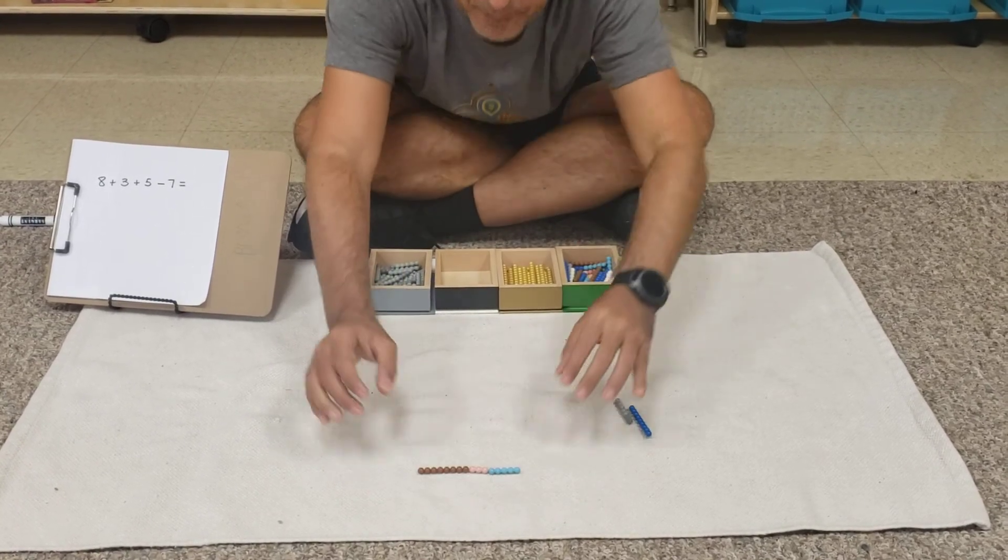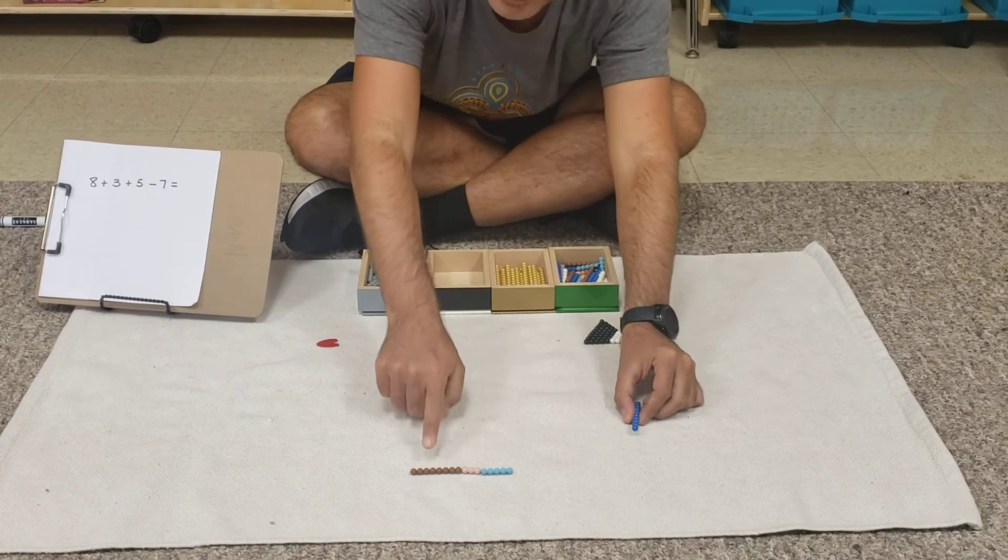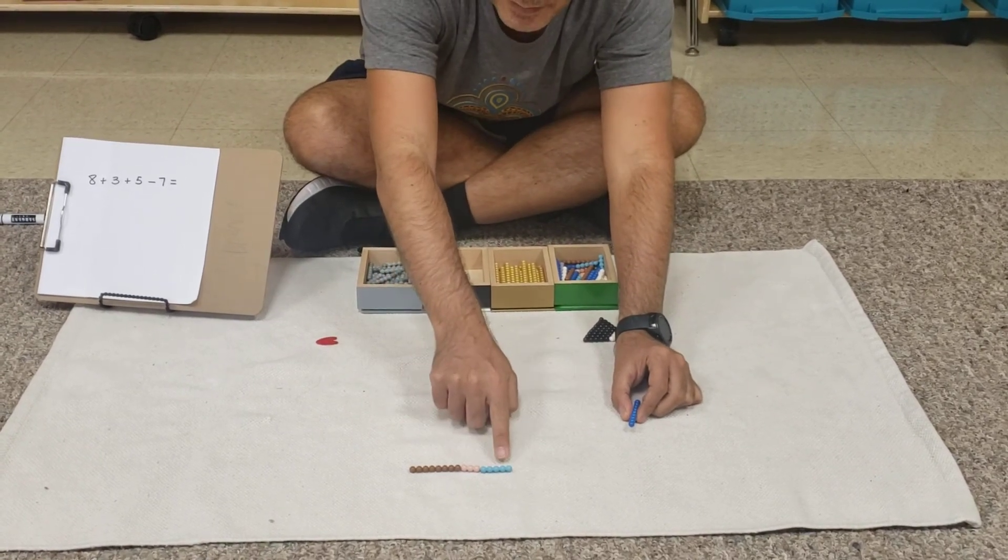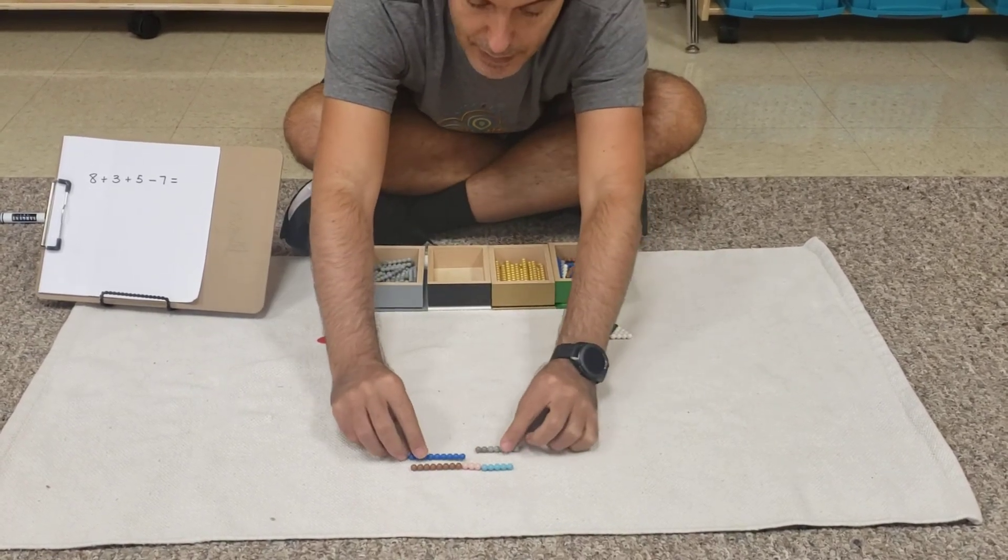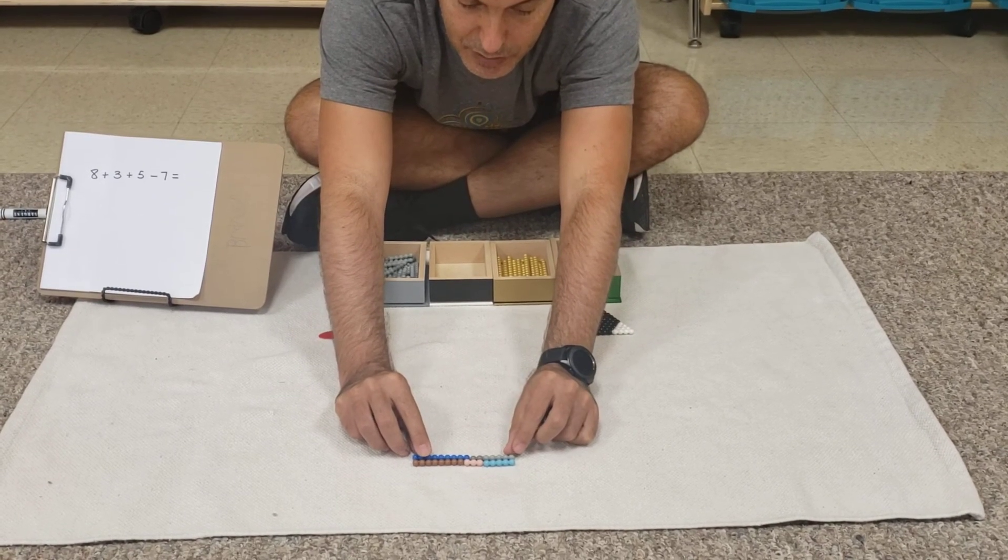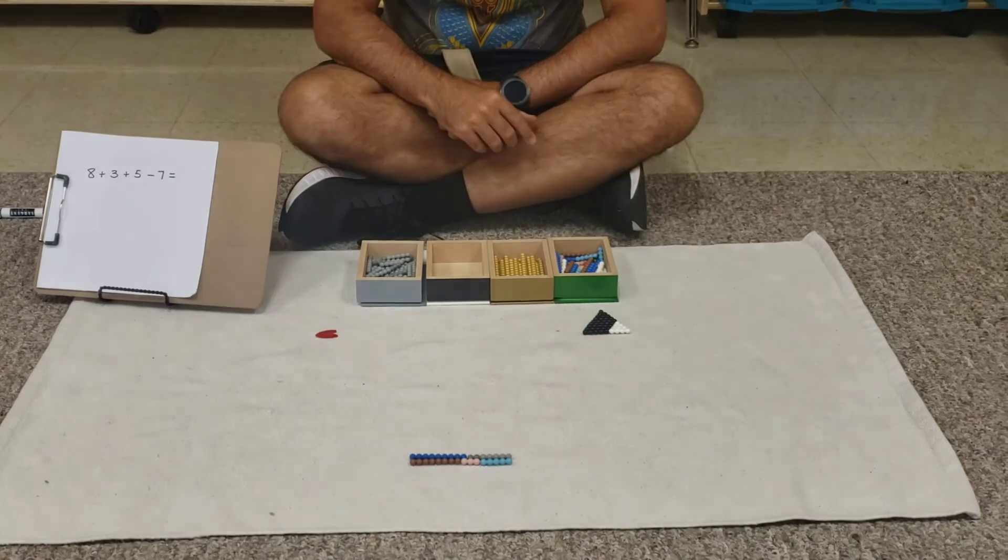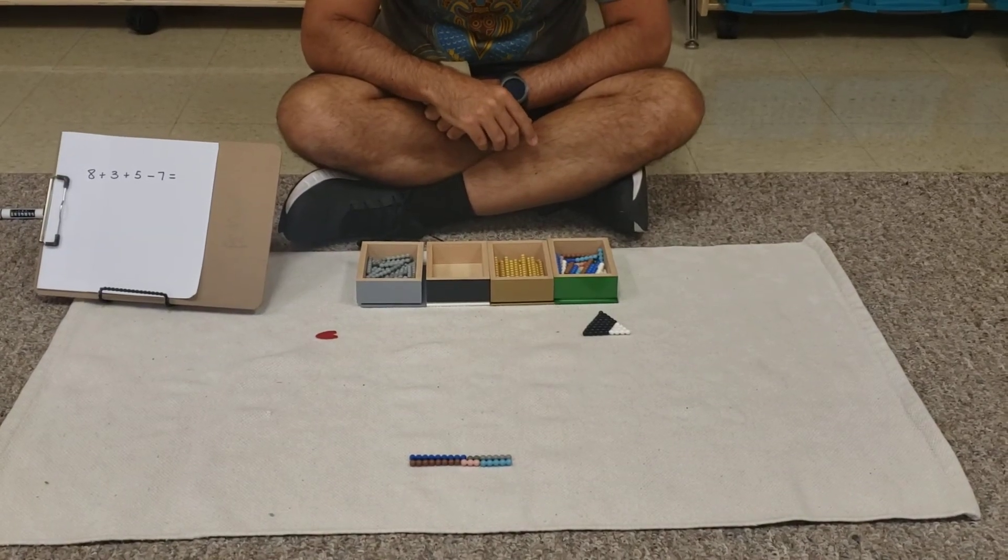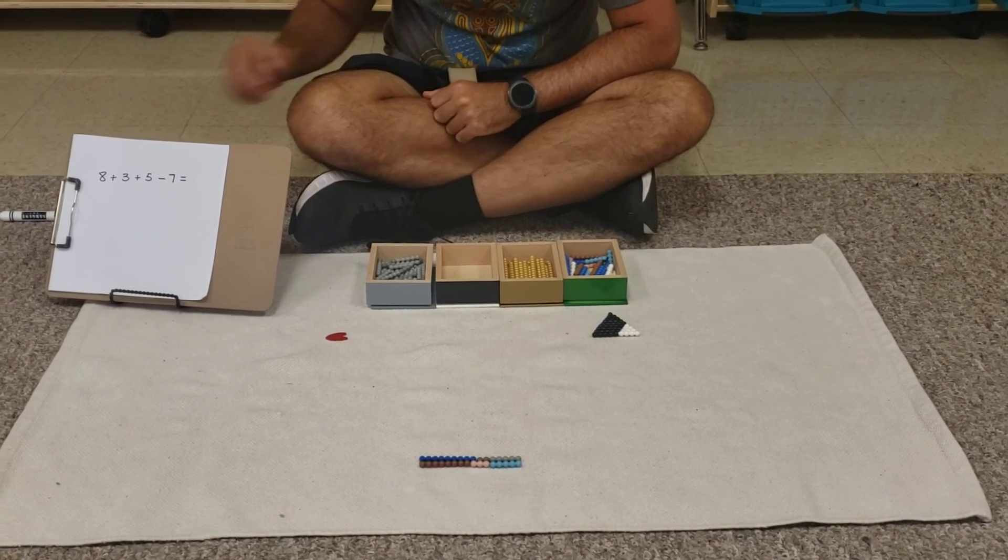So we have here 8 plus 3 plus 5 and then we're going to put on the other side the other numbers and we see that they match. So that is a way to prove that we did the operation correctly.